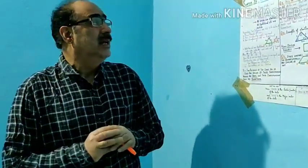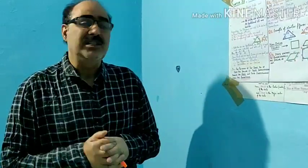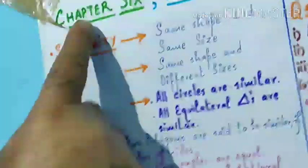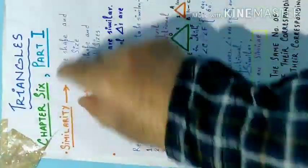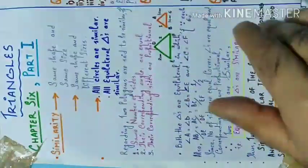तो आज हम आपको बता दें — chapter number 6 है आपके class 10 का — इसका पहला part आज हम discuss करेंगे। Similarity means same shape; same size हो, तब भी triangle similar होती है, और same shape, different size हो लेकिन conditions को fulfill करें — conditions like SSS, SAS, या AAA — तब ही हम कहेंगे two triangles are similar.